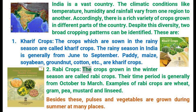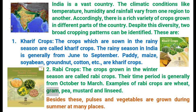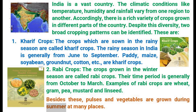Rabi crops. The crops grown in the winter season are called Rabi crops. Their time period is generally from October to March. Examples of Rabi crops are wheat, gram, pea, mustard and linseed. Besides these, pulses and vegetables are grown during summer at many places.